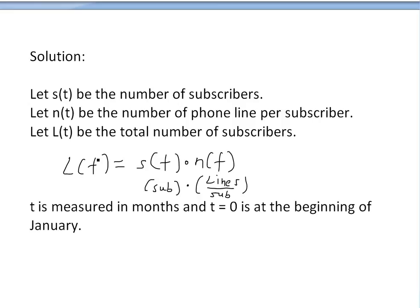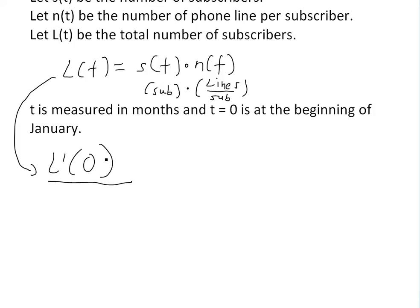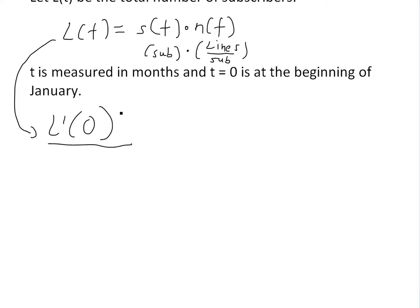To find out how many new phone lines we need for January, we just need to look at what the derivative is, or the rate of change of this per month at L(0). So we need to find L'(0), or the rate of increase at the start of January. And then we'll use that as an estimate for the total number of phone lines we need for that month.